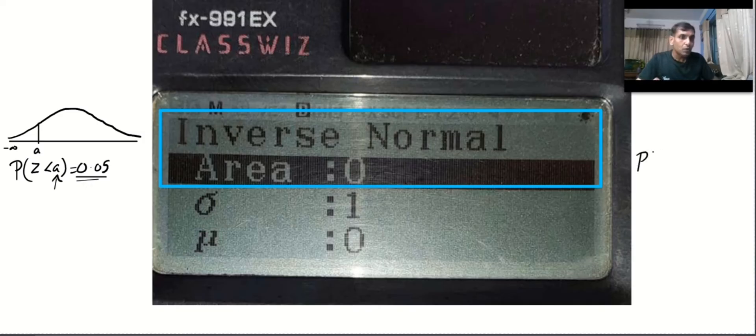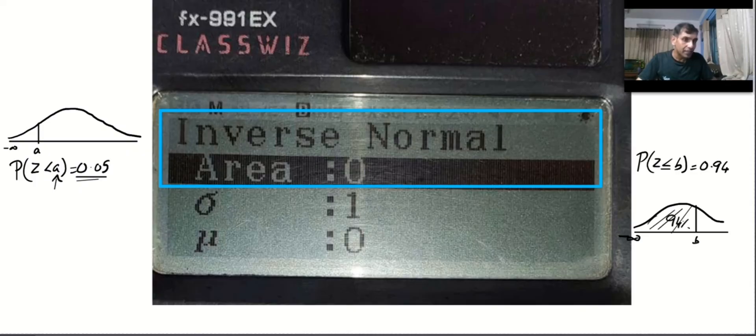If they give me probability Z less than or equal to b is equal to 0.94, then I will understand in the standard normal graph from minus infinity to a number called b, the area will be 94%. How much area will be covered, 94%, and I want b.